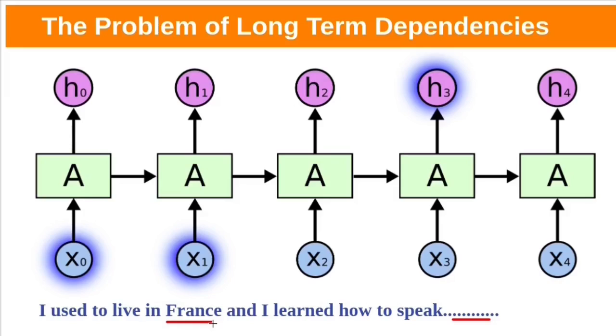We can predict the language as French based on previous reference of France. RNN can remember previous context by maintaining the state of the network.